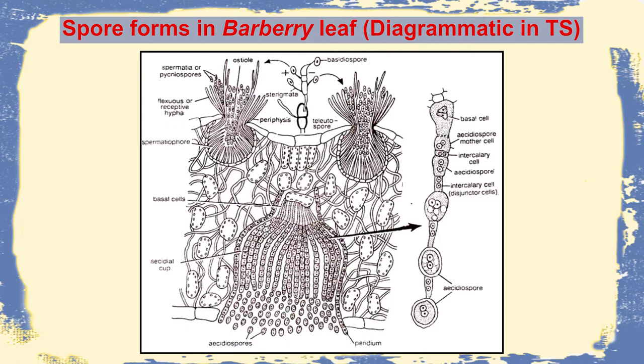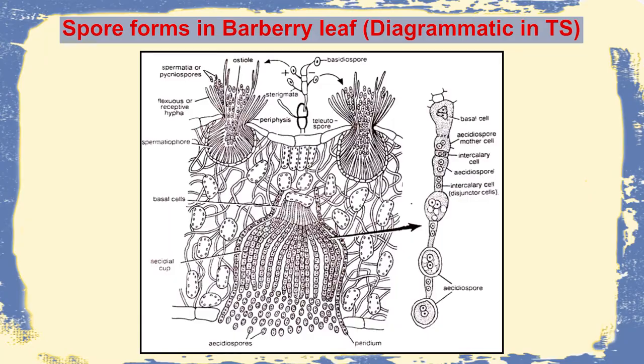The basidiospore, which is haploid, will germinate to produce the spermatia, and this spermatia will be liberated out to invade another barberry plant. At the same time, this spermatia will gradually go down and will create another chain of spores protected by an outer epidermal wall. This is called aecia, and the spores are called aeciospores. So we can see that both on the dorsal and on the ventral surface, there will be sporulating structures on the barberry leaf. This barberry leaf will harbor the pathogen until such time when the wheat plant is in the field and the fungus is free to attack the wheat plant.